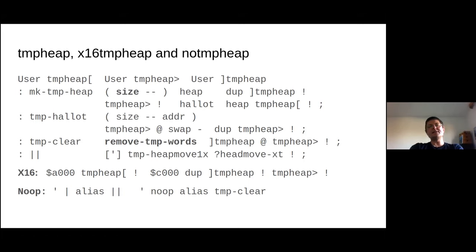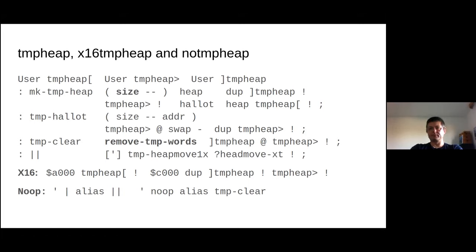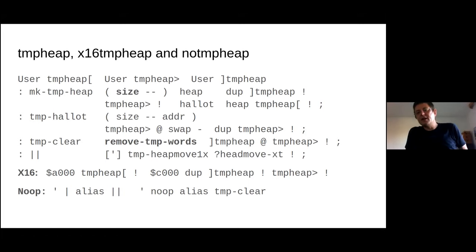A nice thing for the X16, where memory was so tight, is that it does have a banked memory area from A000 of 8K. I could easily place the temp heap there with a fixed size. A third option — very easy with a few aliases — was to create a null implementation, which turned out to be useful for the Commodore 16 which has plenty of memory and doesn't need this.